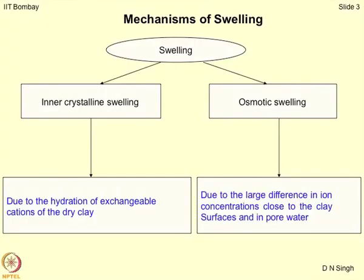What is the mechanism of swelling? As we discussed in the previous lecture, there are two different types of swelling mechanism. We can classify them as intercrystalline swelling or osmotic swelling. Intercrystalline swelling is due to the hydration of exchangeable cations of the dry clay. When clays come in contact with water, hydration of cations takes place and because of that there is a double layer formation, which is responsible for increase in volume or size of the clay particles.